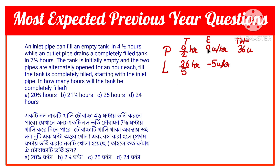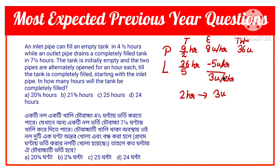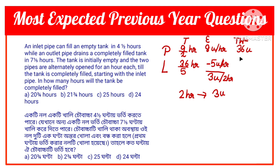Since the two pipes are opened alternately, one after another: 8 − 5 = 3 units. So 3 units of water are filled in 2 hours — that is, 3 units per 2 hours. In 2 hours, with each pipe open for one hour alternately, 3 units of water are filled.